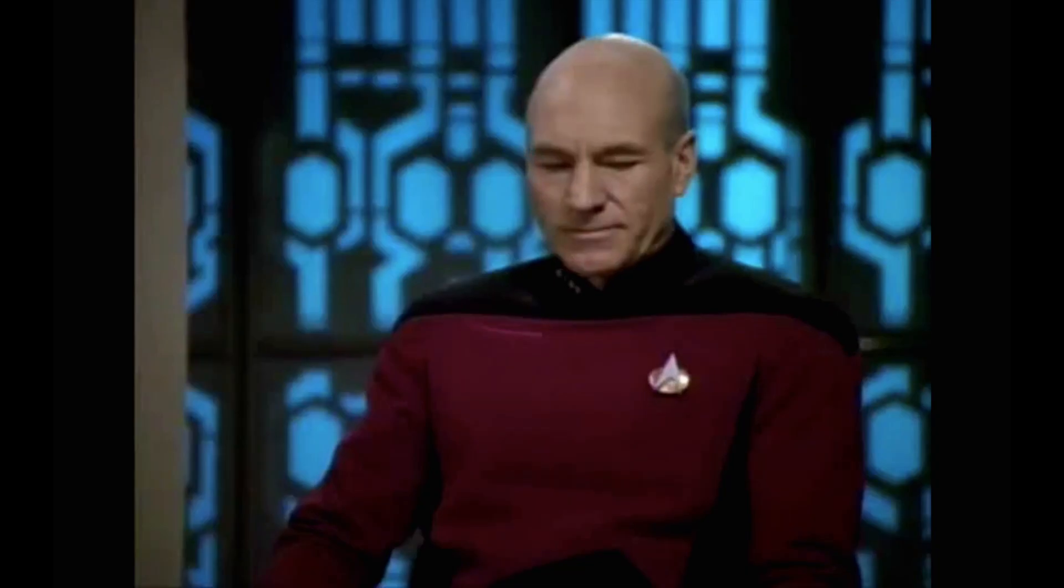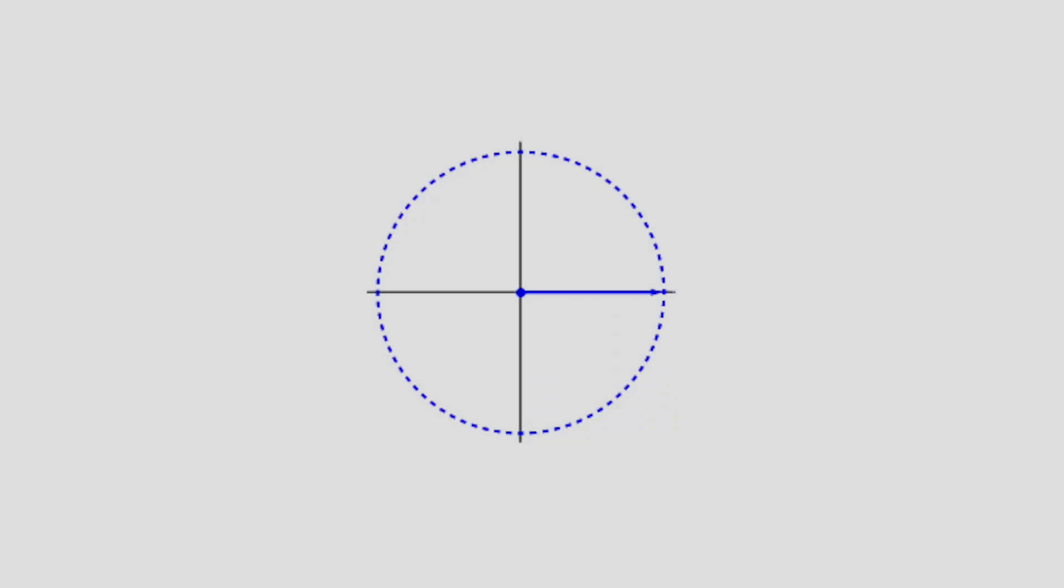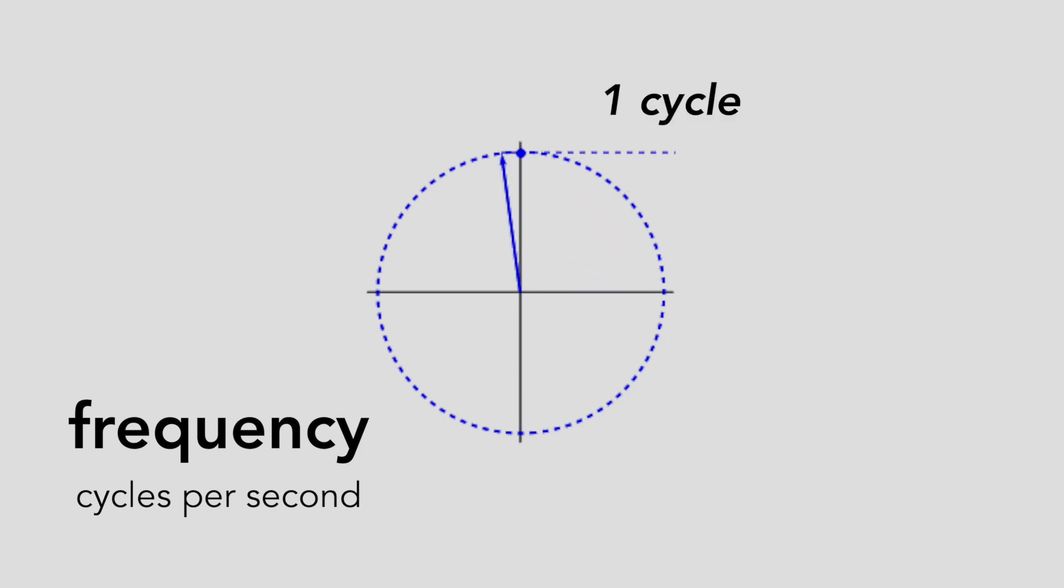When we draw a phaser for a system like this, there's one primary rule to keep in mind. A prime directive, if you will. The phaser rotates at a constant speed. It doesn't rev up or slow down. This constant rotation means the phaser has a certain frequency that does not change. It completes the cycle every time it returns to a given point on the circle. And the frequency measures how many times it does this in one second.